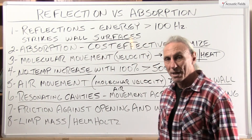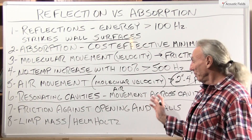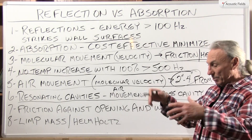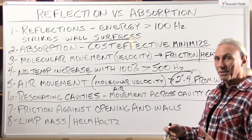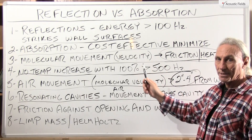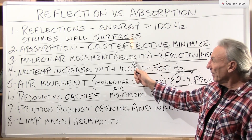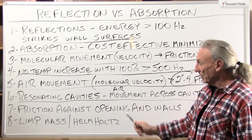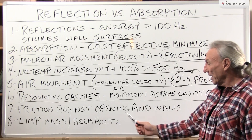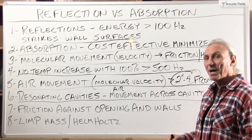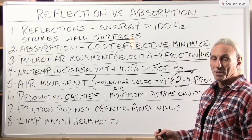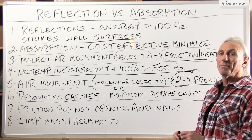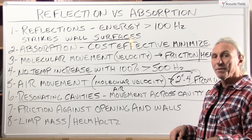What's another way to absorb sound? Resonating chambers. Air movement across an opening or a cavity into a chamber. And remember, all these absorption processes are about air movement or velocity. Here we're running air across foam or some limp mass material. Here we're using a resonating cavity, and the friction against the opening and the walls inside the cavity produce the absorption. So the cavity is designed for a resonant frequency — everything above that resonant frequency is absorbed, everything below is not.